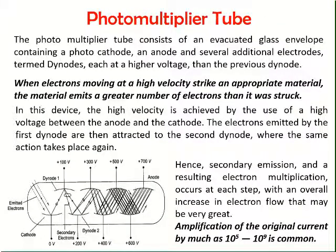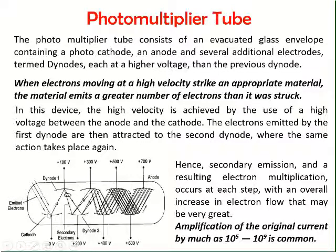To increase the amplitude of the current from a photoemissive cell, we use a photo multiplier tube, which acts as an amplifier circuit for increasing the current from the photoemissive cell. When electrons moving at high velocity strike an appropriate material named as a dynode, that material emits a greater number of electrons than originally struck. A photo multiplier tube consists of several dynodes — unlike a simple photoemissive cell which has only one cathode and one anode.